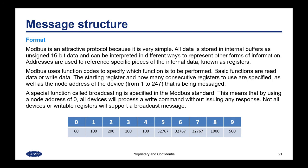Modbus uses function codes to specify which function is to be performed. Basic functions are read data and write data. The starting register and how many consecutive registers to use are specified, along with the node address of the device, which can be from 1 to 247. A special function called broadcasting is specified in the Modbus standard — by using a node address of 0, all devices will process a write command without issuing any response. Not all devices or writable registers support broadcast messaging.